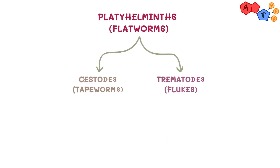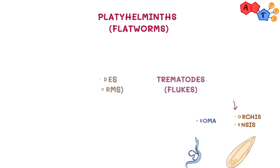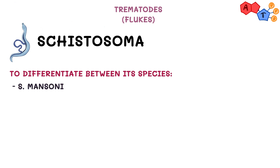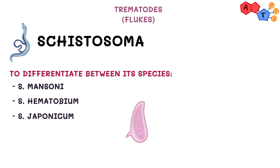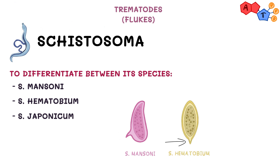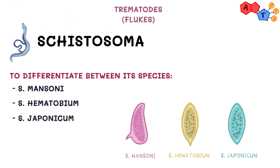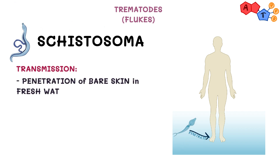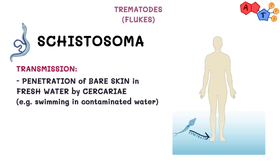Next, we're going to talk about trematodes, or flukes. We'll be talking about Schistosoma and Clonorchus sinensis. Starting with Schistosoma, it's important to differentiate between three species: Schistosoma mansoni, Schistosoma haematobium, and Schistosoma japonicum. We use their eggs to differentiate between them. Schistosoma mansoni egg has a lateral spine, whereas Schistosoma haematobium has a terminal spine, and japonicum does not have a spine. Schistosoma is transmitted when cercariae penetrate bare skin in fresh water, for example when swimming in contaminated water. The intermediate host for Schistosoma is snails.